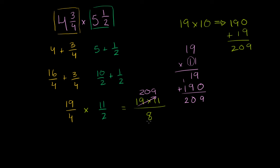That's the same thing as 209 divided by 8. So let's just divide 8 into 209. 8 doesn't go into 2. It does go into 20 2 times. 2 times 8 is 16. We subtract. 20 minus 16 is 4. Bring down the 9.